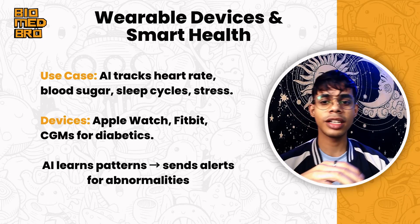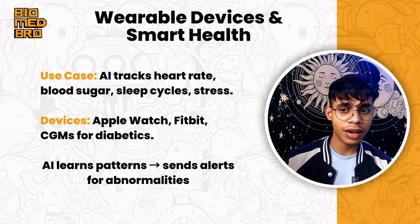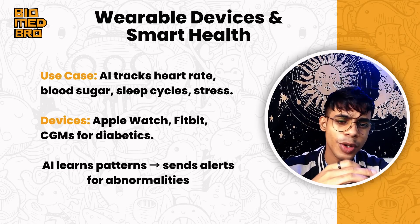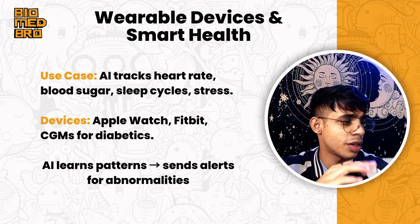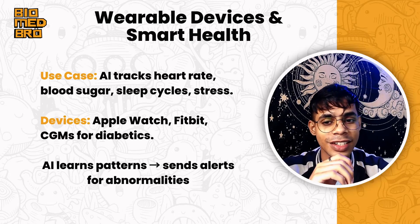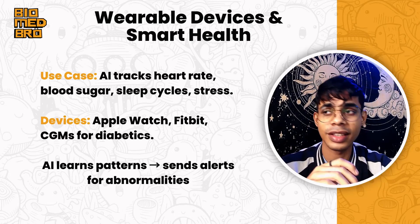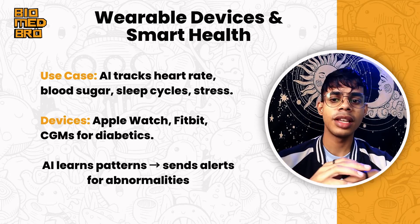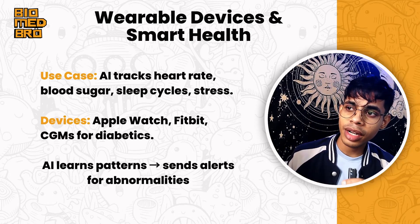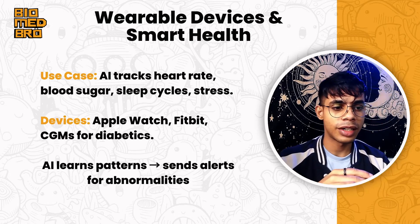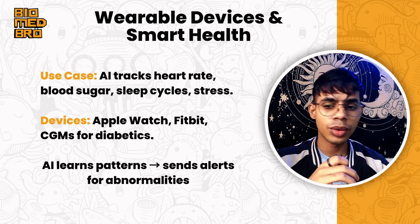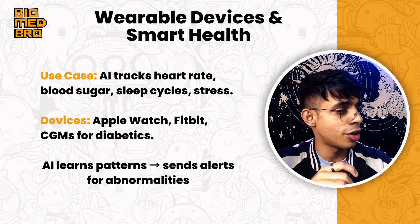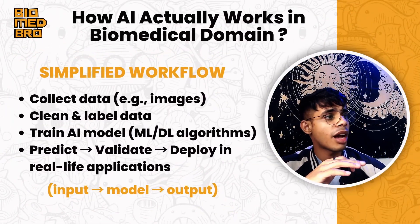Wearable smart devices and smart health: AI tracks your heart rate, blood sugar levels, sleep cycles, stress, and more. Common devices include the Apple Watch, Fitbit, and CGMs for diabetics. AI learns your patterns — for example, it continuously tracks heart rate and sends you an alert for abnormalities as soon as a reading goes beyond a certain threshold, keeping you aware of what's happening with your body.